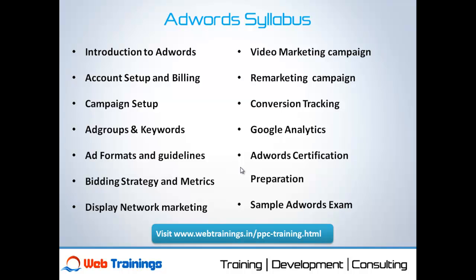Then we will study campaign setup, which is the most crucial part — how to target a campaign to a specific location, how to target advertising to a specific language, and how to target users from a specific demographic. After that we will cover how to create ads and keywords, including different types of bidding and keyword match types and how they are helpful in real-time. Then we will study ad formats and guidelines — the different types of ad formats Google AdWords provides and the guidelines for writing good ads.